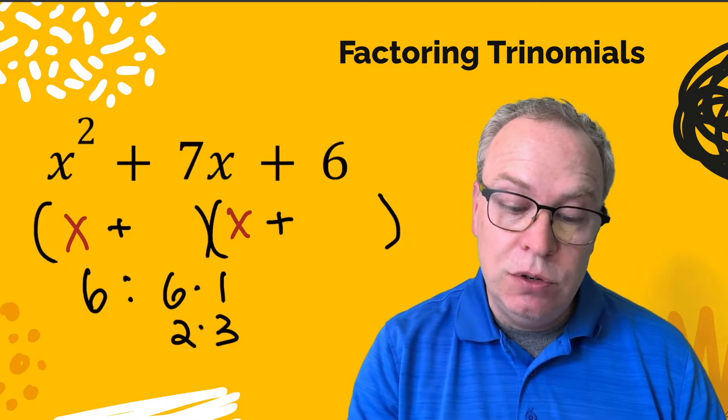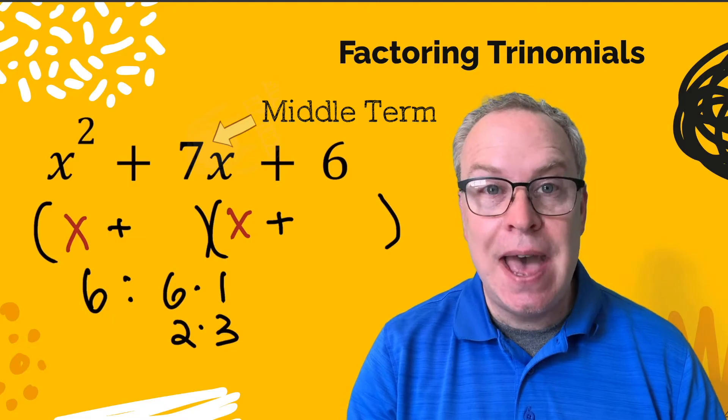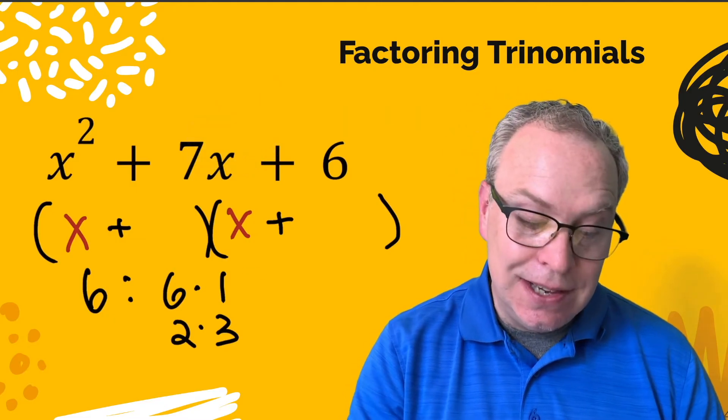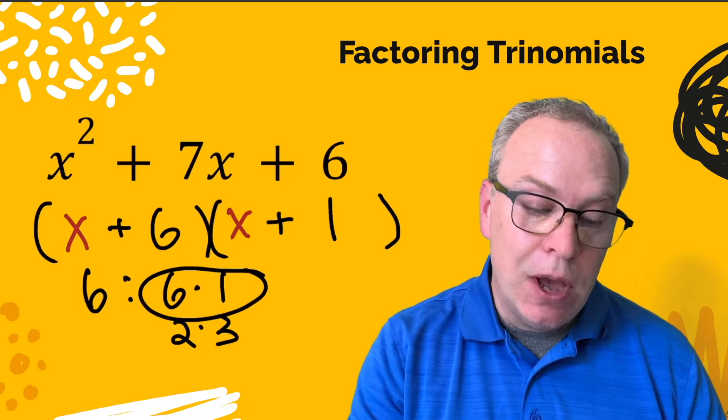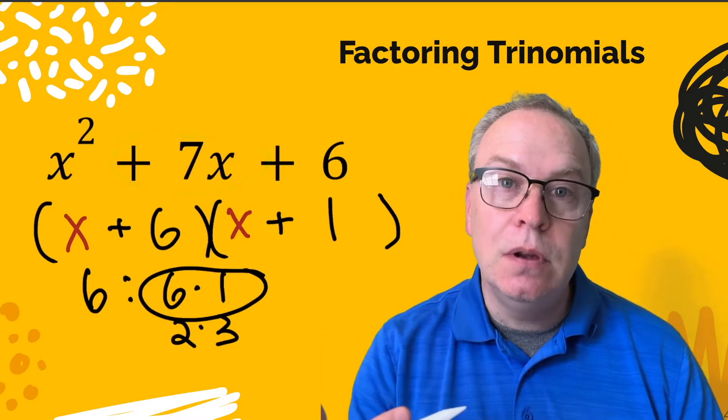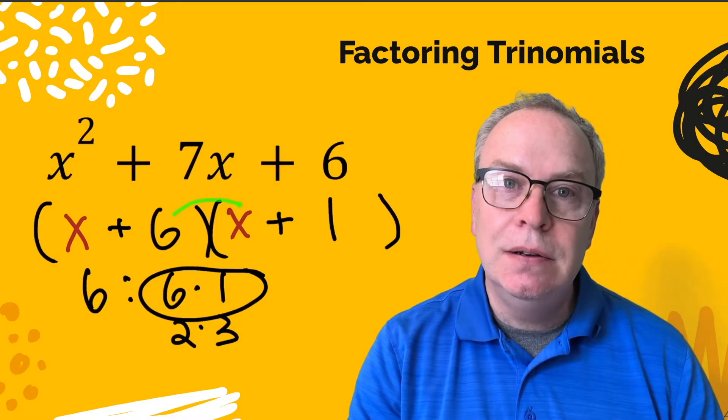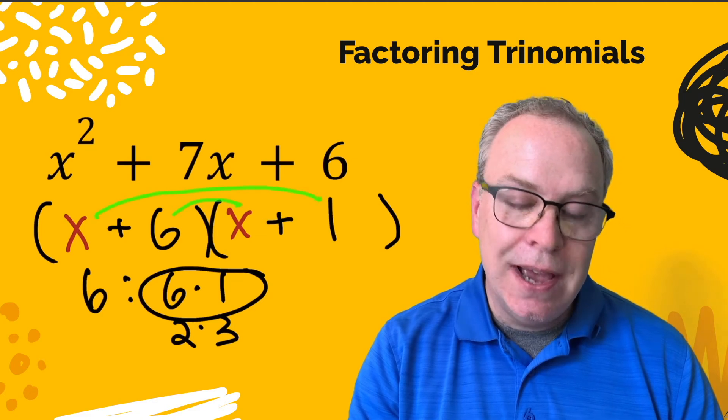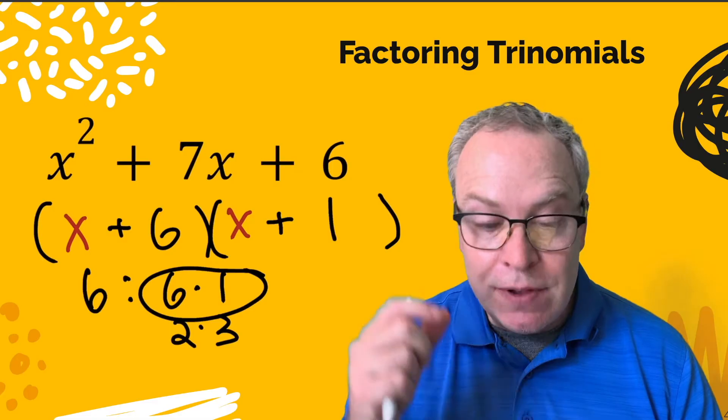Now which of those two numbers add up to be that middle term, the 7x? And you see it is the six and the one. So I'm going to fill those in here, the six and the one. Now we always check our work before going on. Check that that middle term truly does come out to be 7x. And I see that our middle term here, the inside is 6x and the outside is 1x. 6x plus 1x does equal 7x.